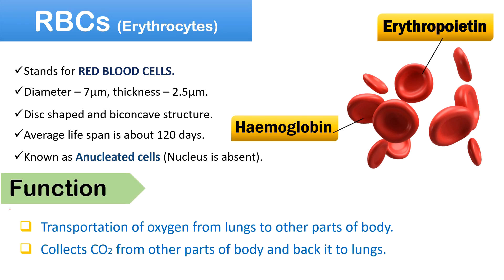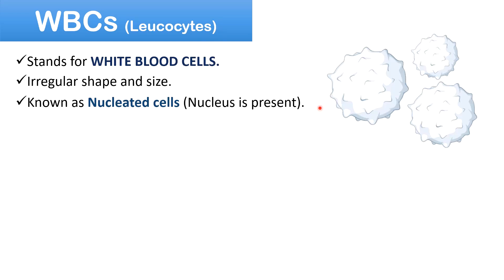The function of RBCs has two main aspects. First, RBCs contain hemoglobin which helps in the transportation of oxygen from the lungs to the other parts of the body. Second, they collect carbon dioxide from the other parts of the body and carry it back to the lungs.